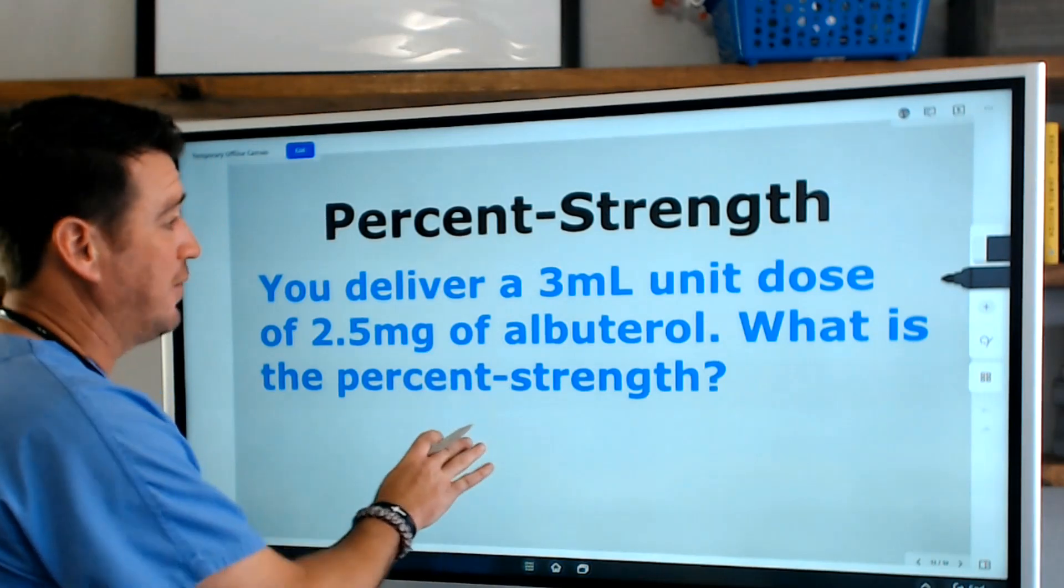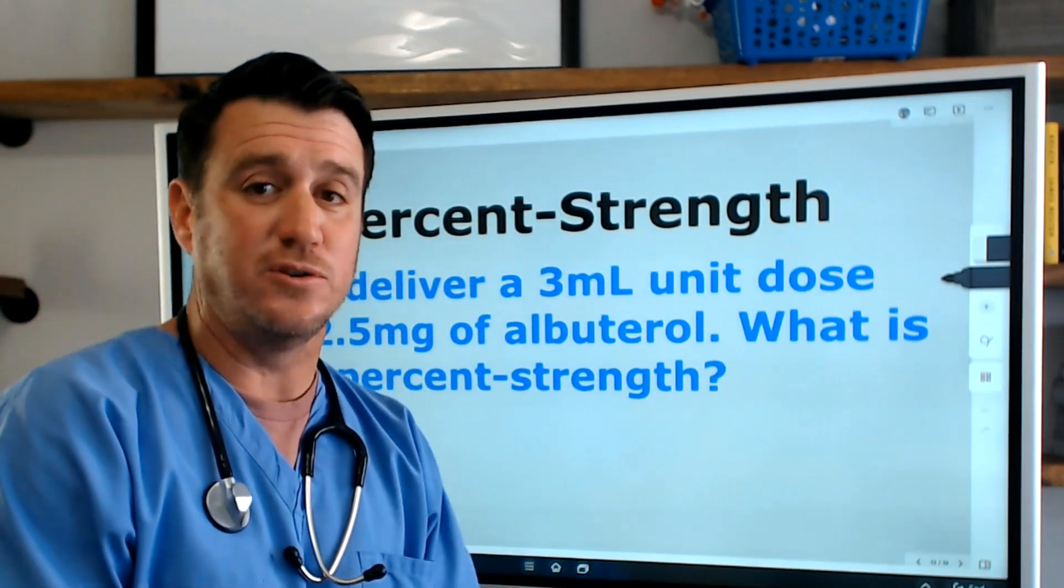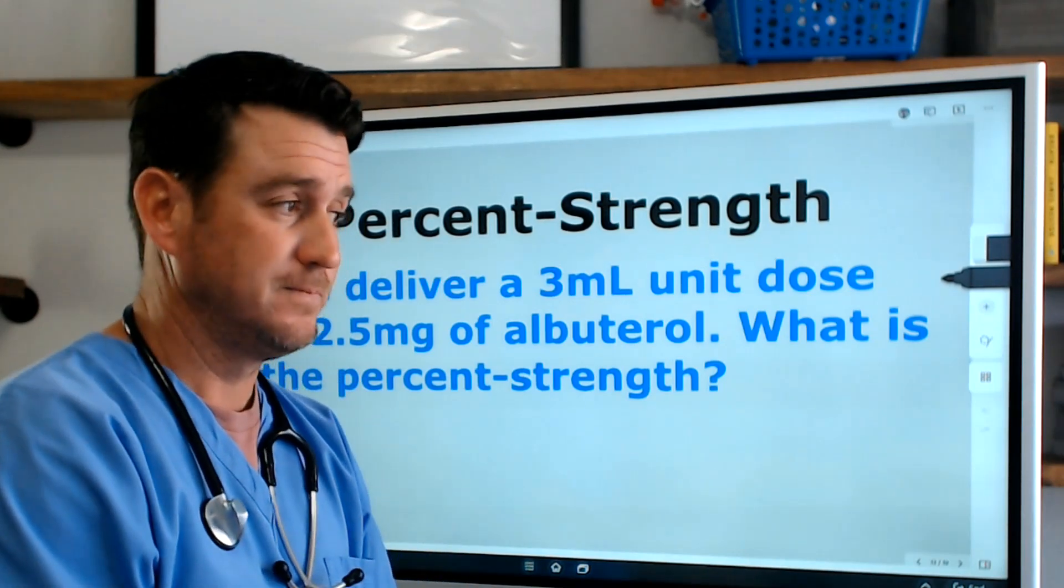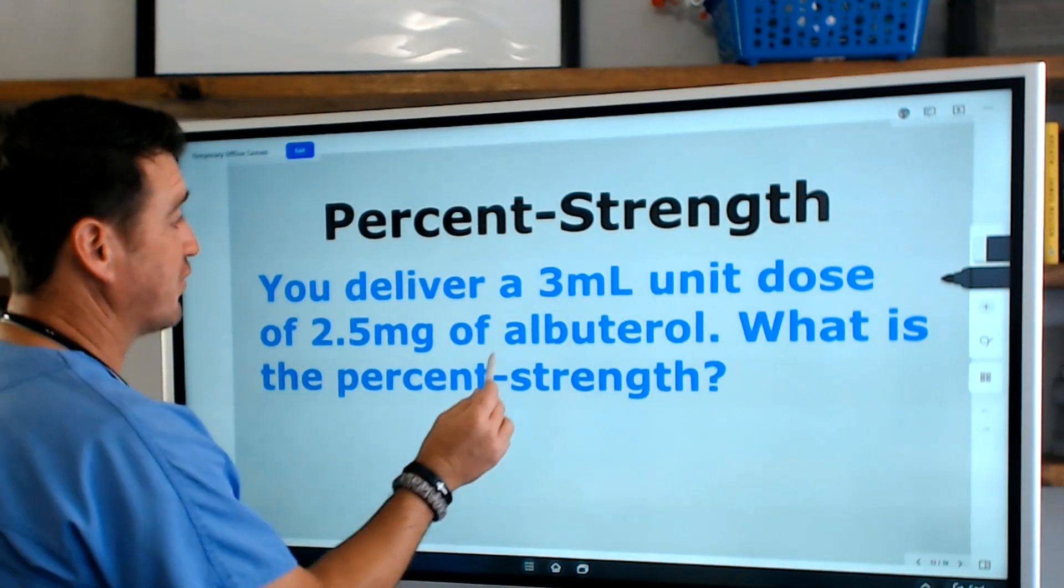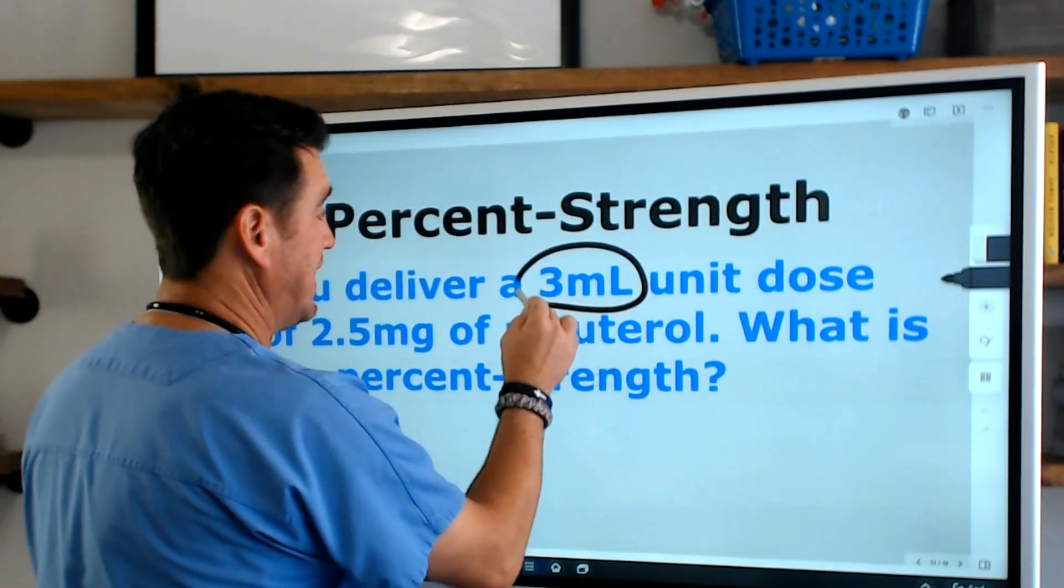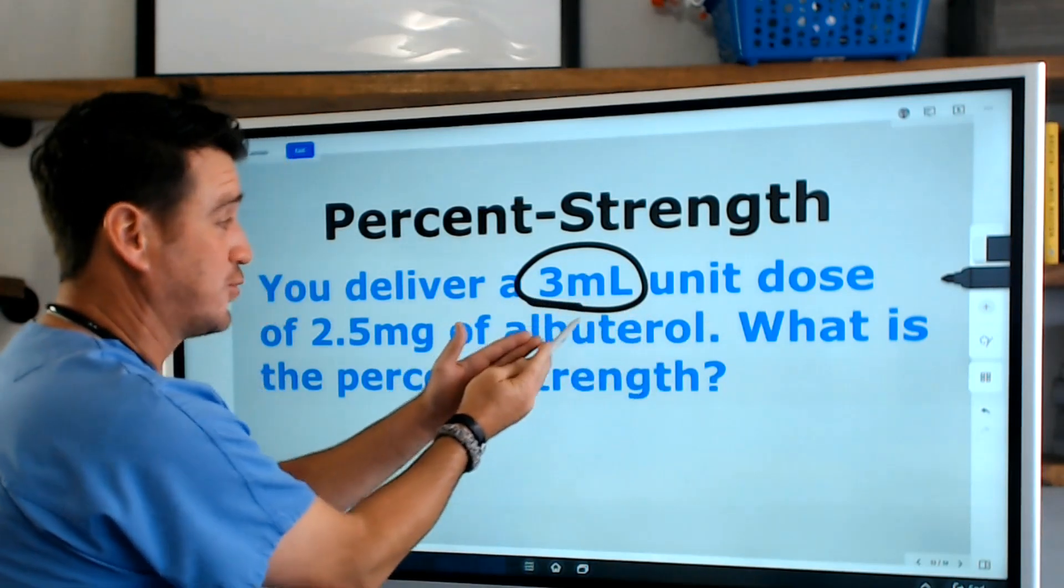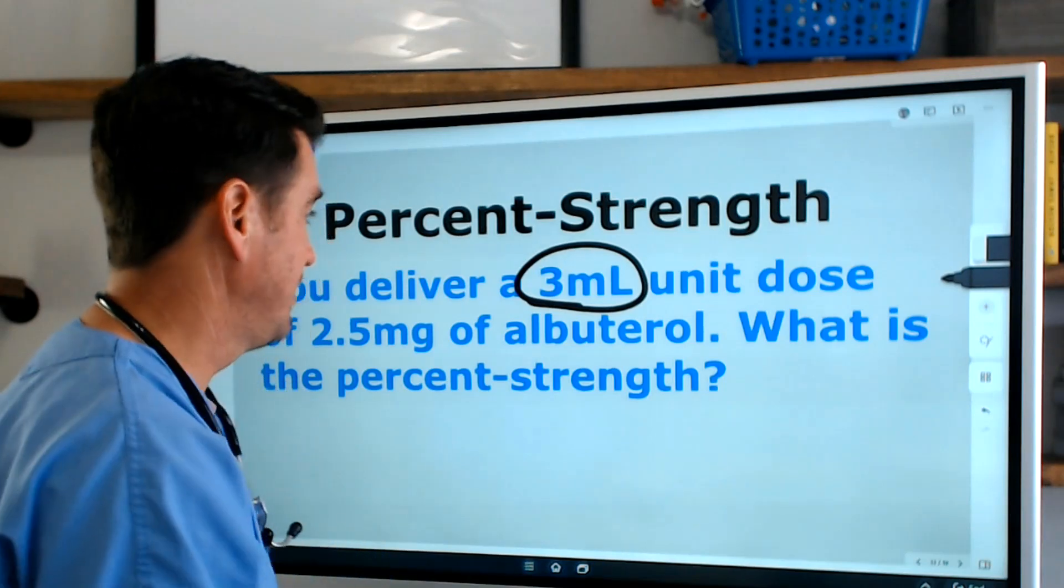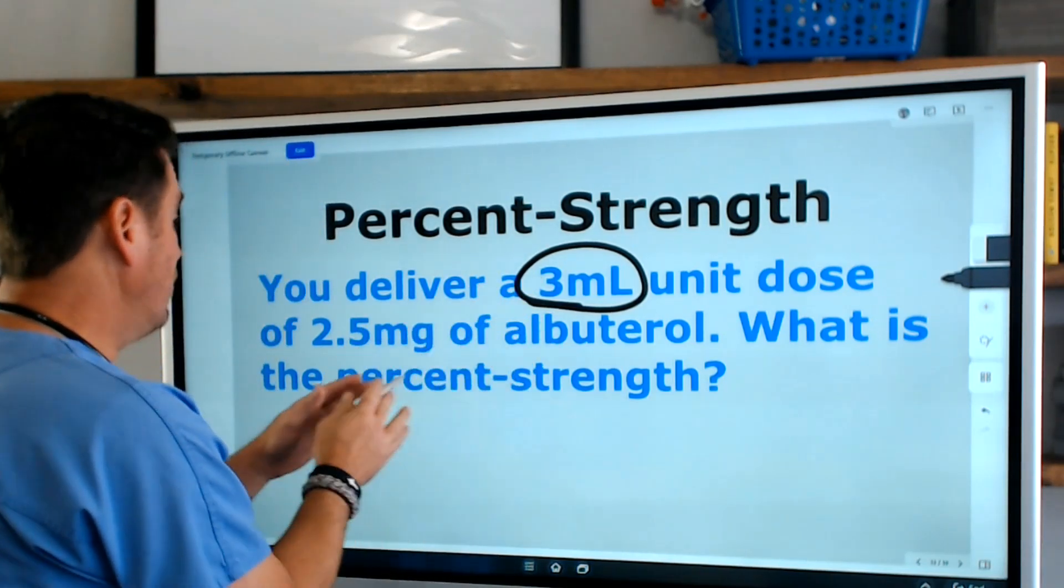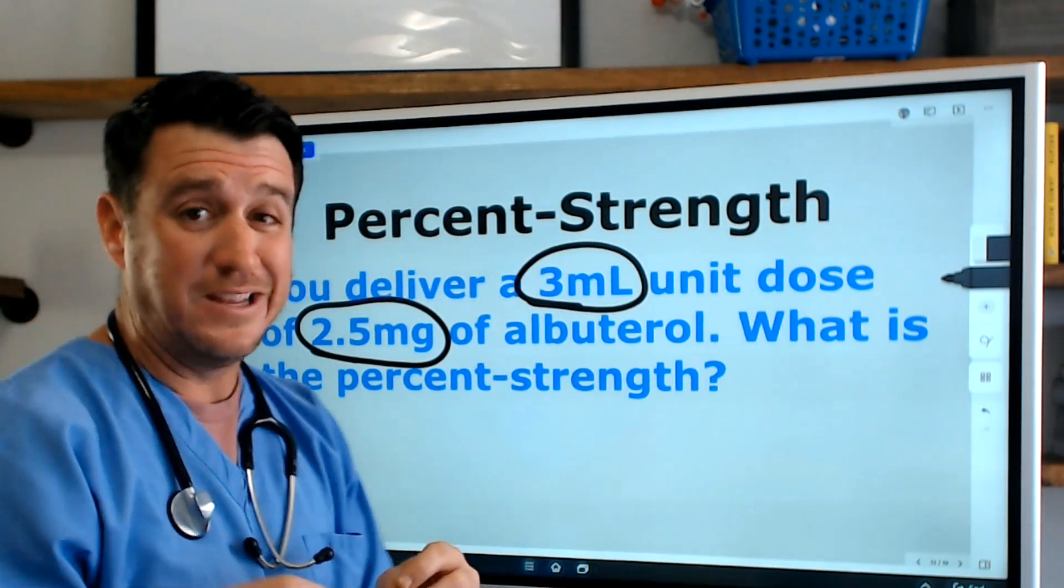Now let's go back to the scenario. What you should be doing right now is identifying: of that formula, what values do I have? When you do so, you'll see you're delivering 3 ml of a unit dose—that's your amount. And the dose is 2.5 milligrams—that's going to be your dose.